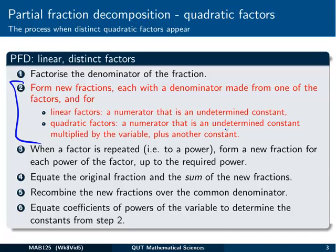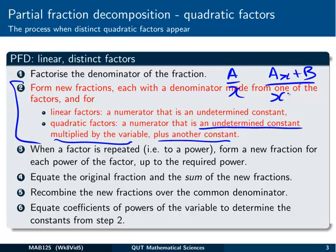All we do is put in a term that has on top of it an undetermined constant multiplied by the variable, plus another constant. So instead of having something like a over x, we're going to have something like ax plus b over x squared plus 4. x squared plus 4 being an example of an irreducible quadratic in terms of real numbers. Everything else though in the partial fraction decomposition works exactly the same way as we've seen already.